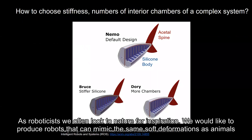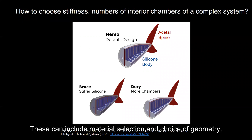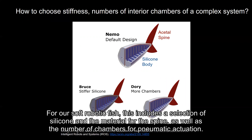As designers, we often face an overwhelming number of decisions for a soft robotic system. These can include material selection and choice of geometry. For a soft robotic fish, this includes a selection of silicone and the material for the spine, as well as the number of chambers for pneumatic actuation.